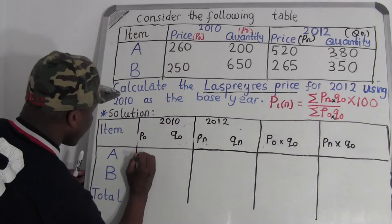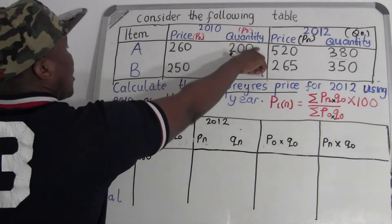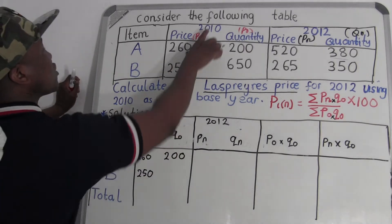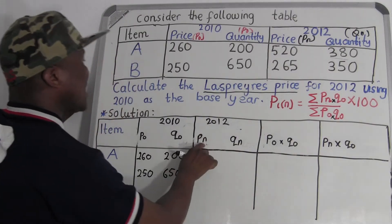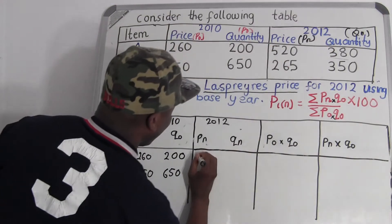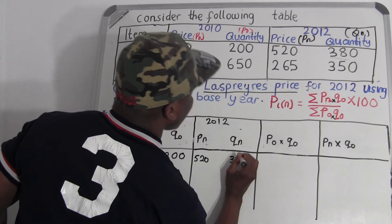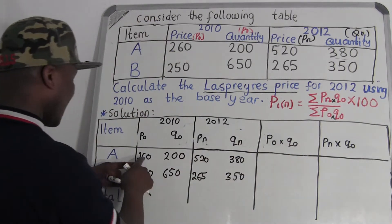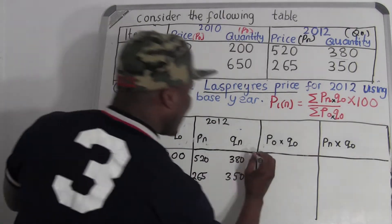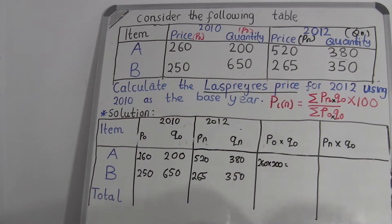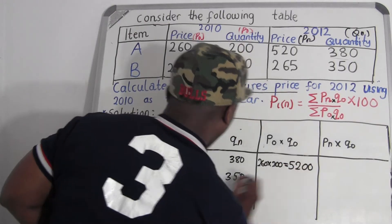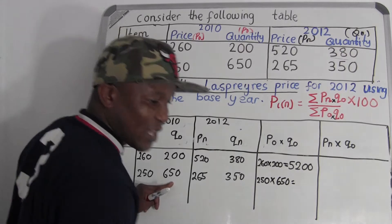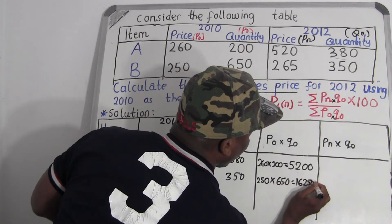Now filling in values: p₀ for Item A is 260, q₀ is 200; p₀ for Item B is 250, q₀ is 650. Then pₙ: Item A is 520, Item B is 265. Now compute p₀ times q₀: for Item A, 260 times 200 equals 52,000. For Item B, 250 times 650 equals 162,500.